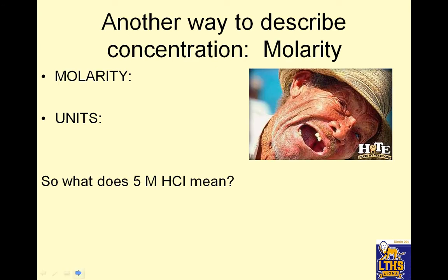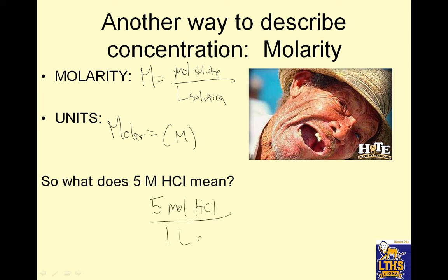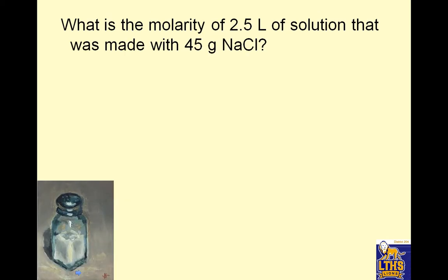Another way to describe concentration is molarity. Molarity is big M. It equals moles of solute over liters of solution. Its units are called molars, and its symbol is M. So what does 5 molar HCl mean? It means I have 5 moles of HCl per 1 liter of solution. That's the ratio. I could have 25 milliliters of 5 molar, but the ratio is 5 moles of HCl and 1 liter of solution.